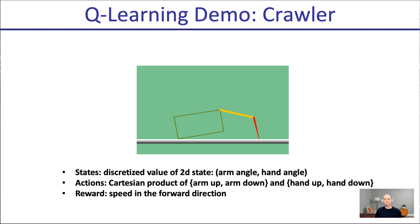Let's look at some demos. Here's a simple robot — a box with a two-link arm that can actuate a shoulder motor and an elbow motor. We have a 2D state of two angles. It's continuous, so we discretize it to run tabular Q-learning based on samples. The reward is for moving to the right in the forward direction, and actions are increasing or decreasing each angle.